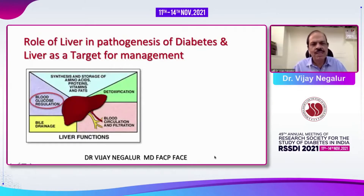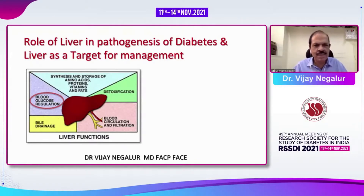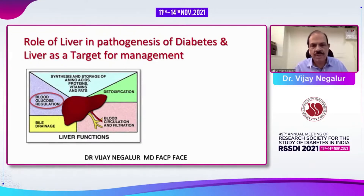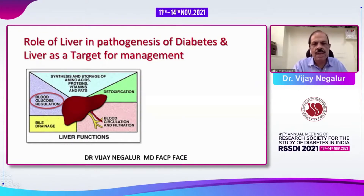All of us know that liver has many functions. It has to do synthesis or storage of amino acids, proteins, vitamins and fats. It has to do with detoxification, removing drugs from the body. It has a dual circulation — the portal and the systemic circulation — and the bile drainage.